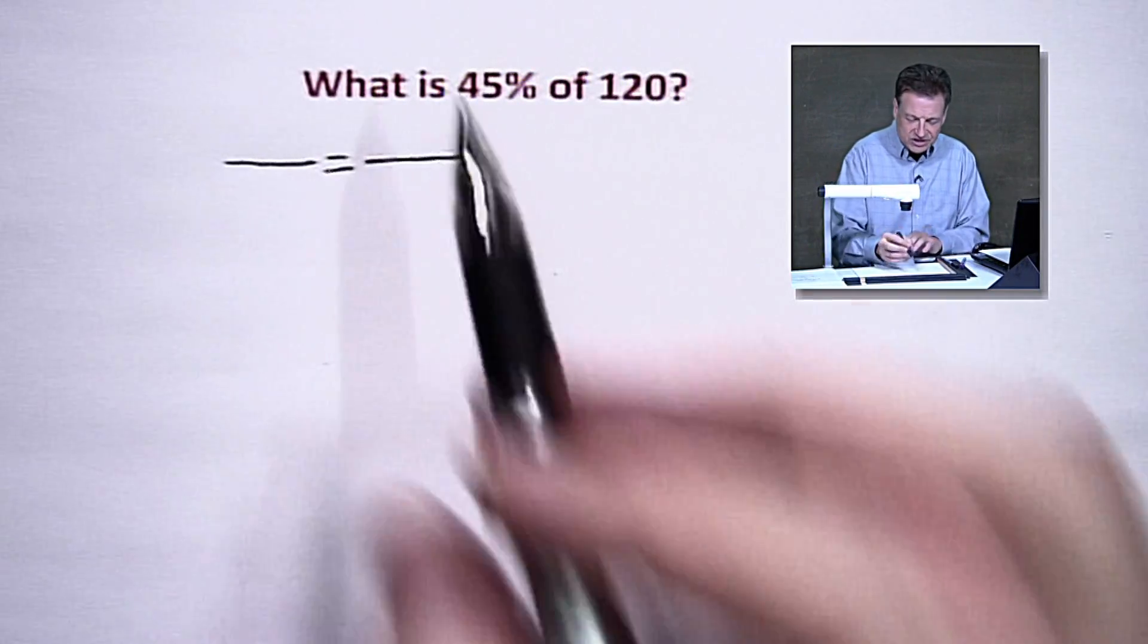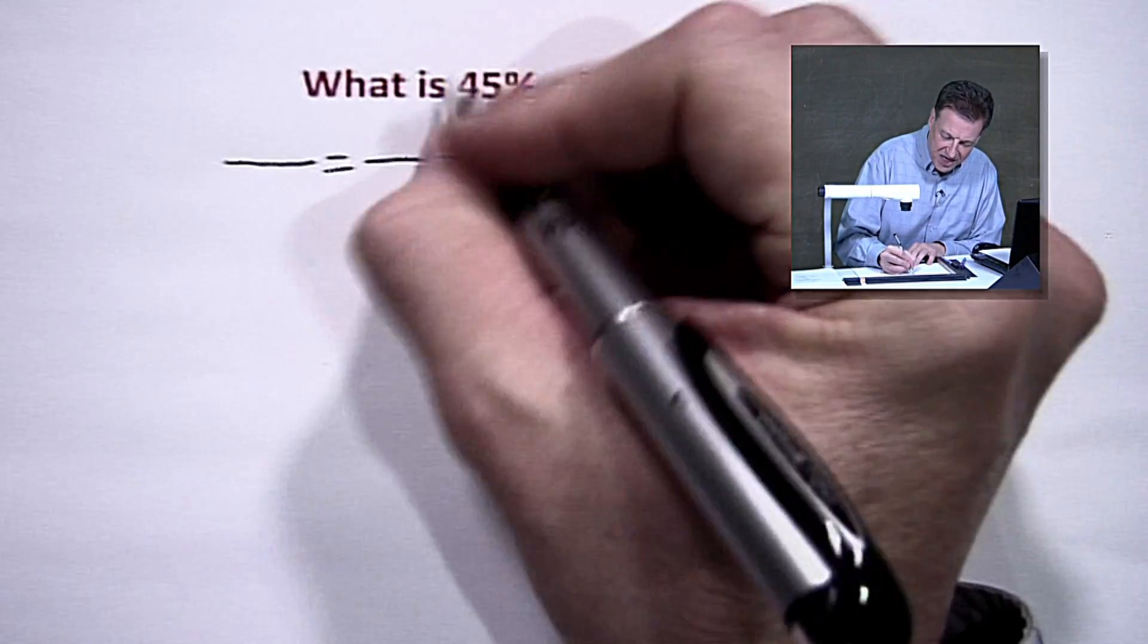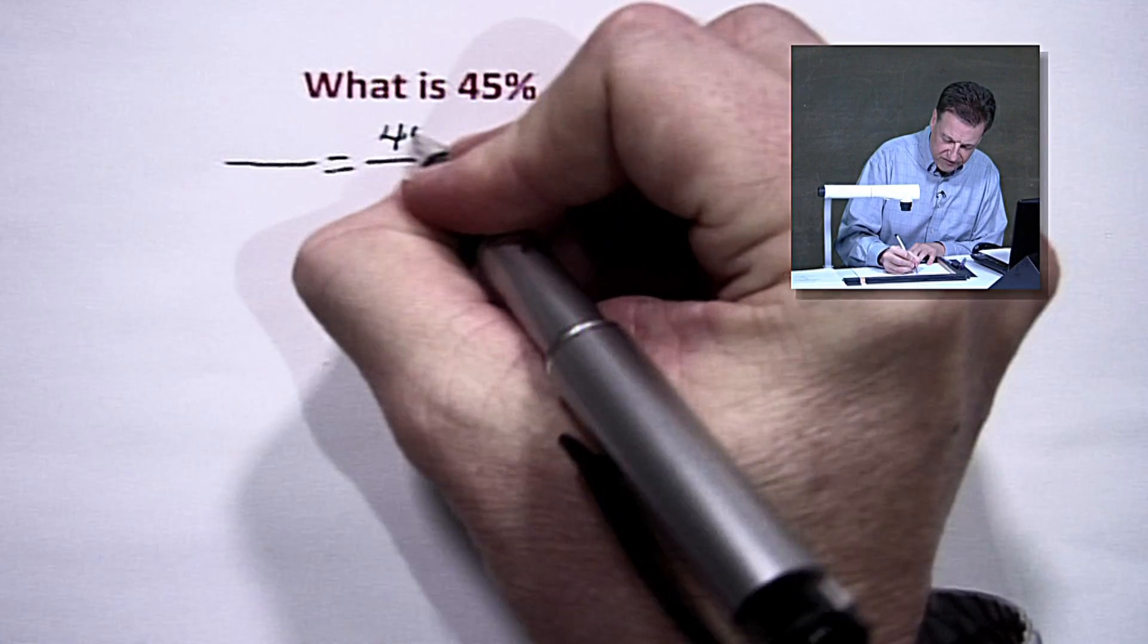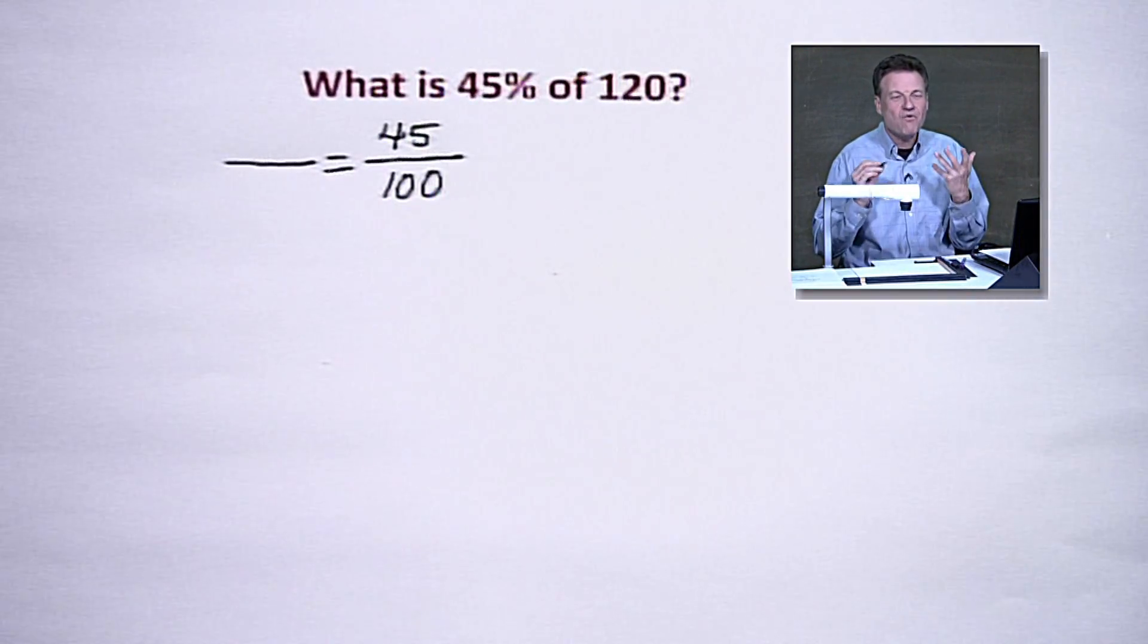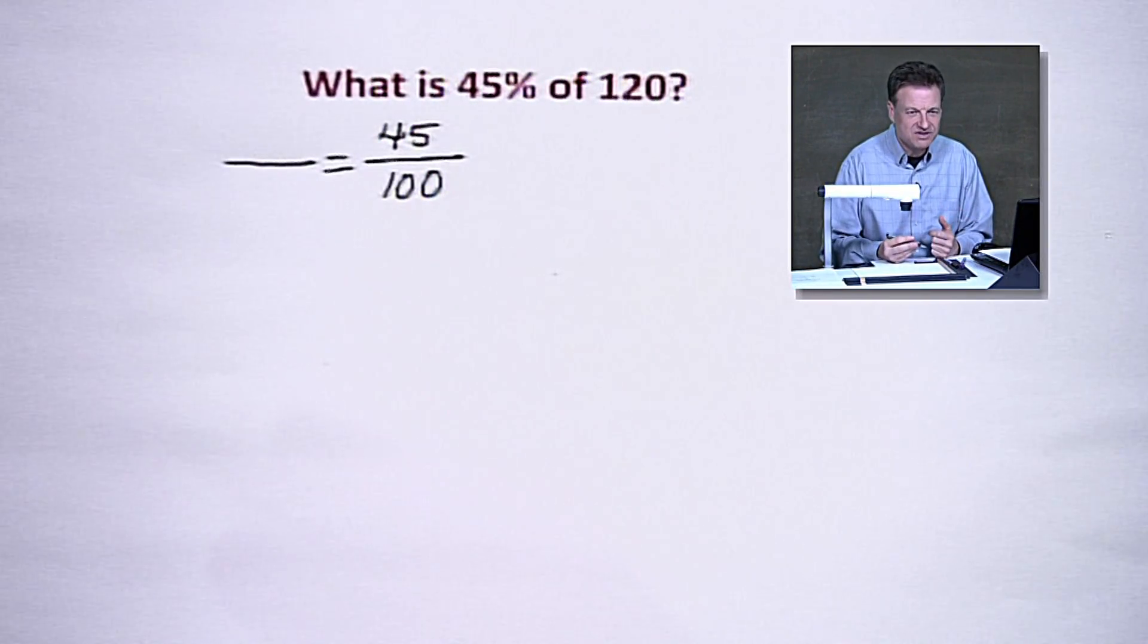We're going to set it up in a proportion style, which simply means two ratios that are equal to each other. Now, the 45%, what that tells me, is that means divided by 100. So we're going to make that 45 divided by 100. Sometimes we hear that 45 over 100. That's what it means, divided by. That's what a fraction is all about. It's division.